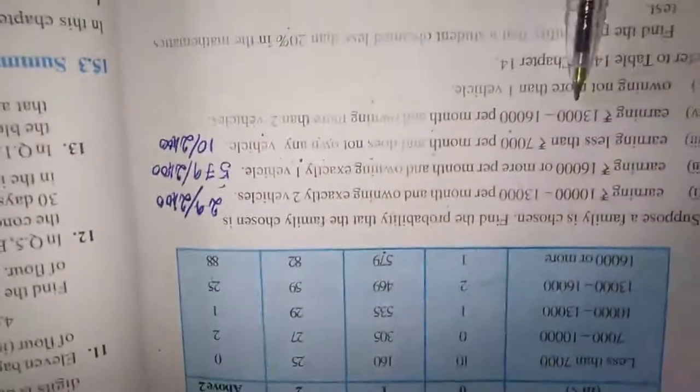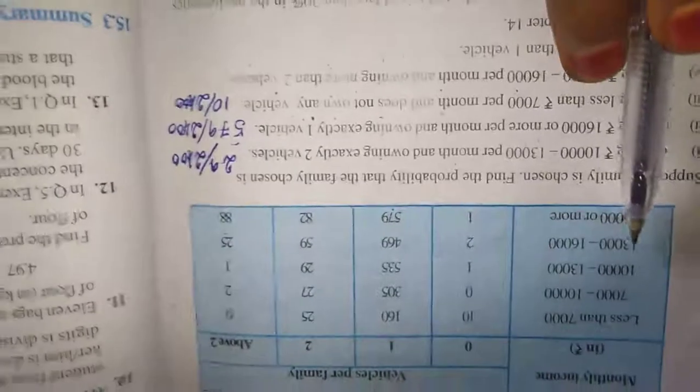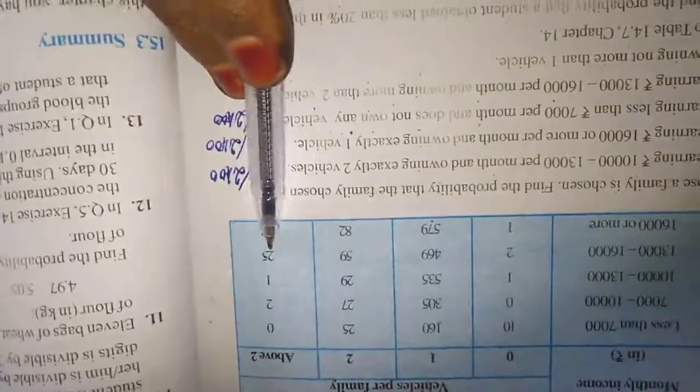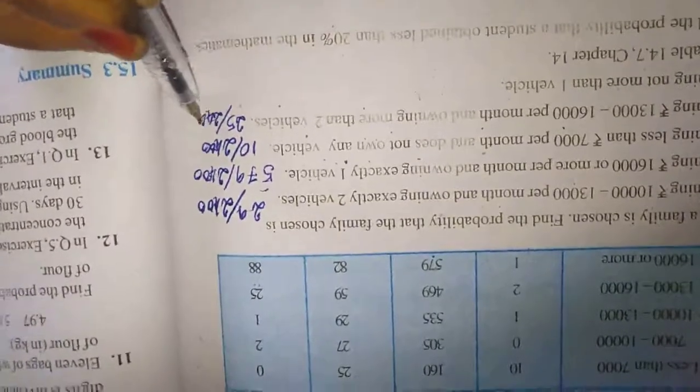Next one, earning 13,000 to 16,000 per month and owning more than two vehicles. See here, this line. More than two vehicles is the last one, above two. It will come. So 25 by 2,400.